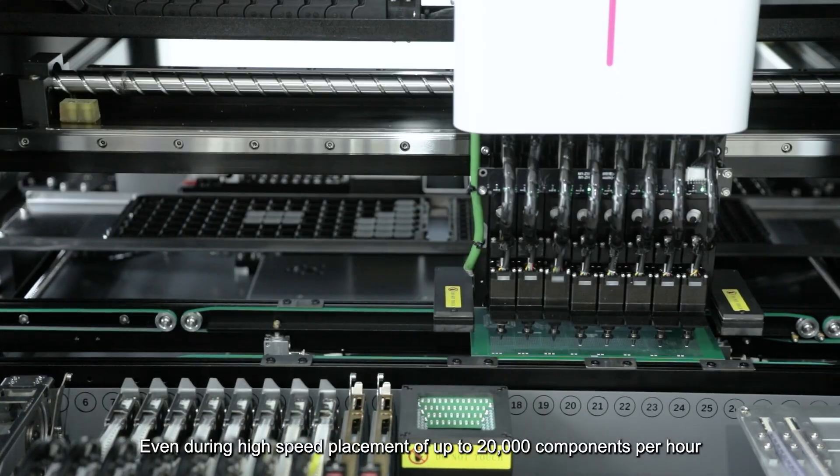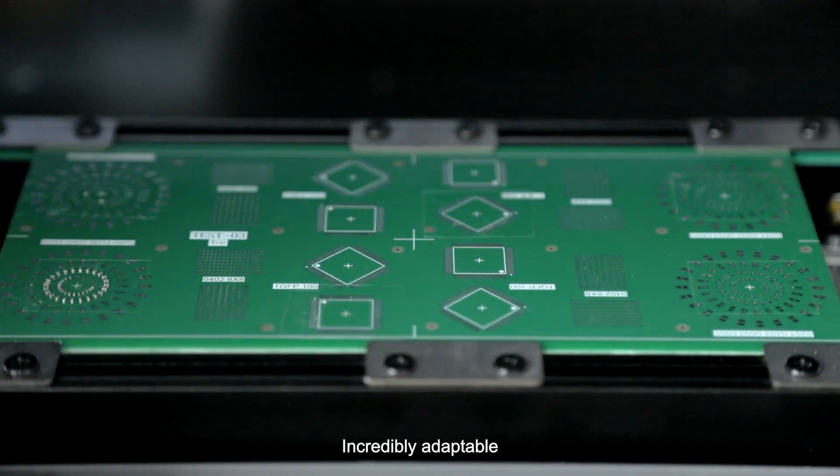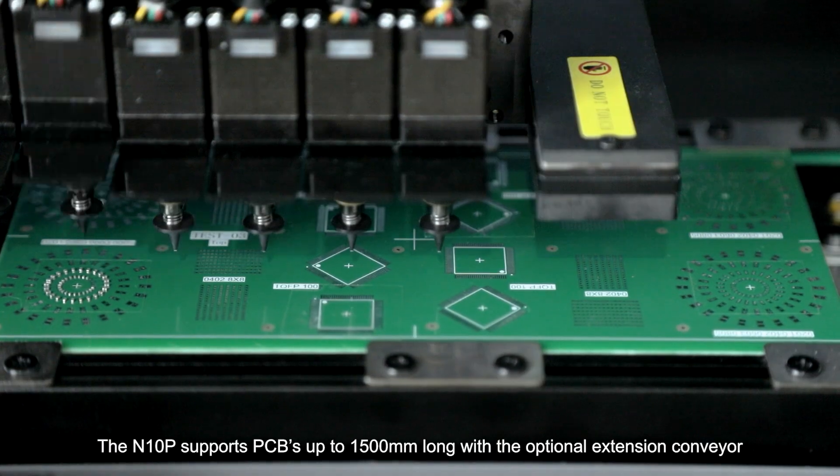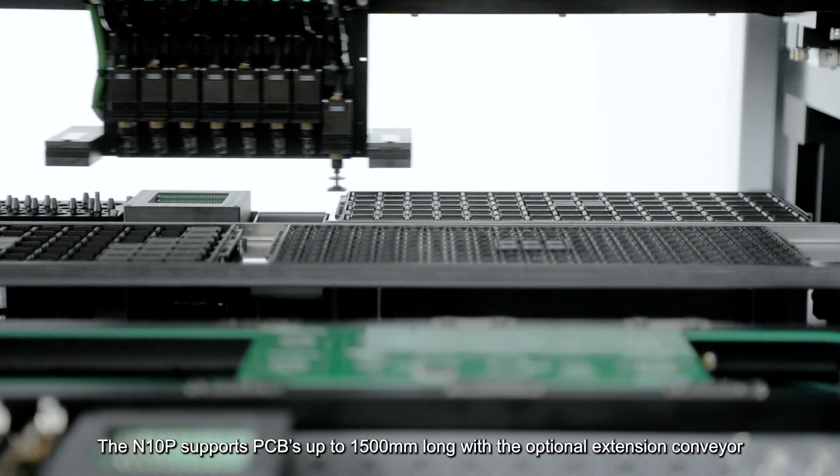Even during high-speed placement of up to 20,000 components per hour. Incredibly adaptable, the N10P supports PCBs up to 1,500 millimeters long with the optional extension conveyor.